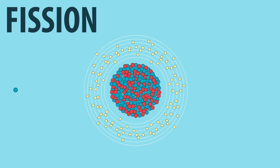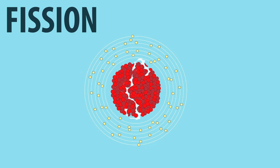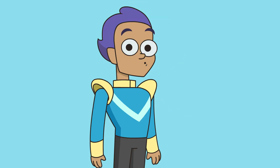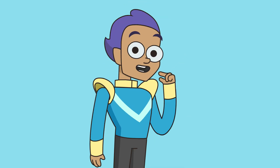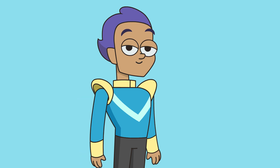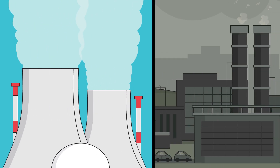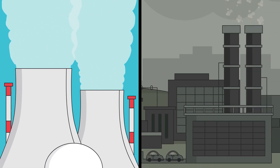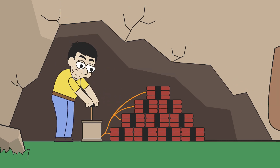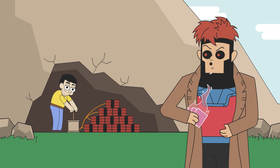With fission, we split large atoms like uranium, breaking the strong nuclear force that holds them together. In the process, we turn a tiny bit of that matter into a ton of kinetic energy. Nuclear fission produces up to three million times as much energy as burning coal or blowing stuff up with dynamite.